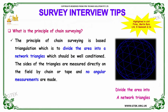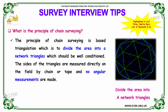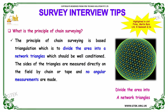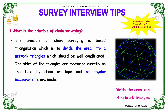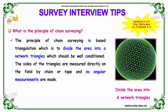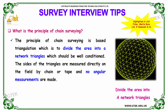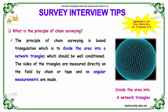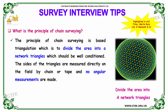Our next question is: what is the principle of chain surveying? The principle of chain surveying is based on triangulation, which is dividing the area into a network of triangles under very precise conditions. The sides of the triangles are measured directly on the field by chain or tape. Hence no angular measurements are made. Simply by dividing the area into a network of triangles, you can perform chain surveying.